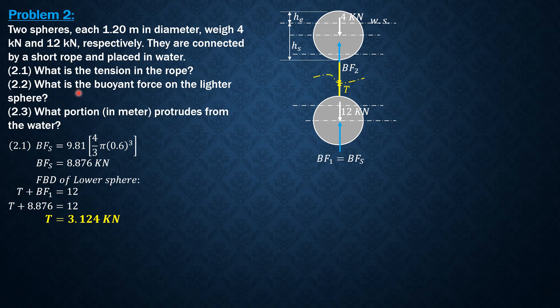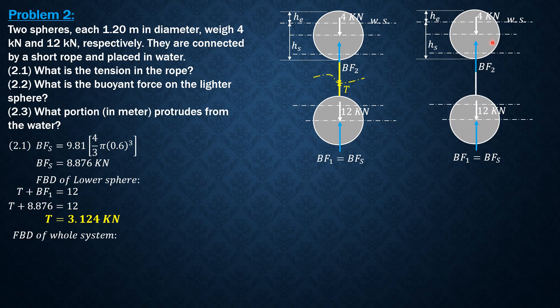Then, the second question, the buoyant force on the lighter sphere. Let's draw the free-body diagram of the whole system. Our equation would be 8.876 + BF2 = 12 + 4. Upward forces equals downward forces. BF1 is 8.876 plus BF2 equals 12 plus 4. From here, we can compute the buoyant force in the lighter sphere equal to 7.124 kilonewtons.